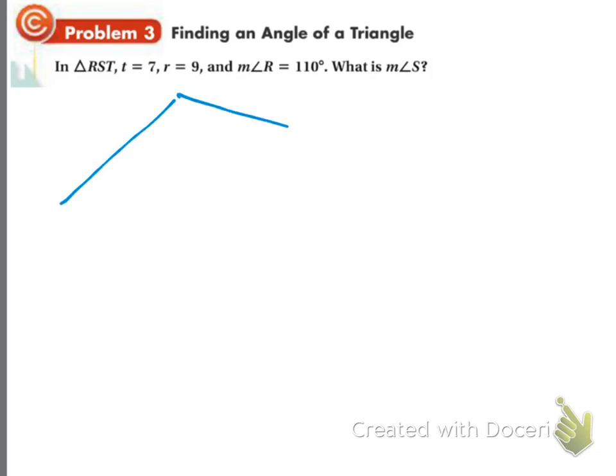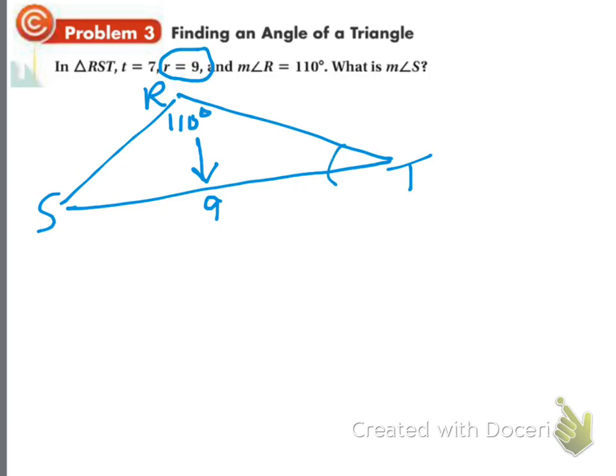So angle R, here's angle R, is 110 degrees. It says r equals 9, little r, so that means across from that we're going to put a 9 because the r's match up. Now R, S, T—it says t equals 7, little t. Well, here's t right here. So across from capital T I'm going to put lowercase t, which is 7. Now here's the issue: they want the measure of angle S. Well, I don't know anything about S—there are no S's in my given. So what I'm going to have to do is find the measure of angle T first, and then use my 180-degree rule to find angle S.